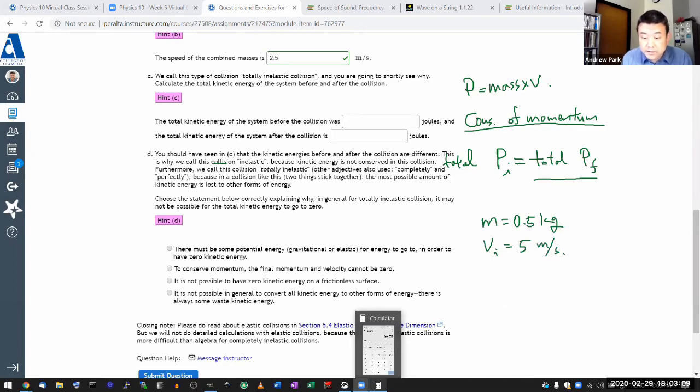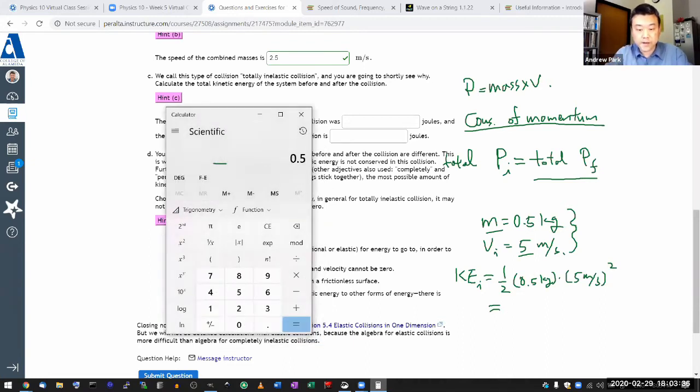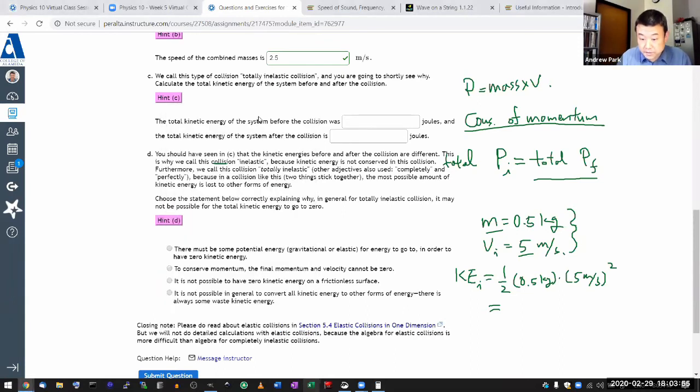So when I look at the kinetic energy, the total kinetic energy before the collision. So it's just going to come from these, the single mass moving at this speed. So initial kinetic energy will be one half times the single mass, 0.5 kilograms times the speed squared, 5 meter per second squared. We're doing this in the calculator. 0.5 times 0.5 meaning one half. And then 0.5 meaning kilogram, times 5 squared. That all looks right. Equals 6.25. So my initial kinetic energy is equal to 6.25 kilogram times meter squared per second squared or joule.